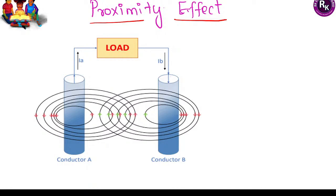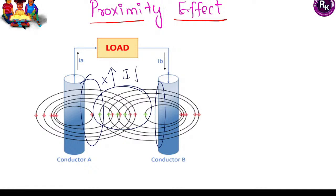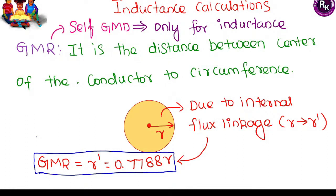Proximity effect: when one conductor is brought into the vicinity of another, the flux generated by both conductors attracts each other. This increases the leakage reactance in the zone between the two conductors. Due to increased reactance, current carried by the conductor in that zone reduces, causing current to concentrate more on the opposite side of the conductor — this is called the proximity effect.